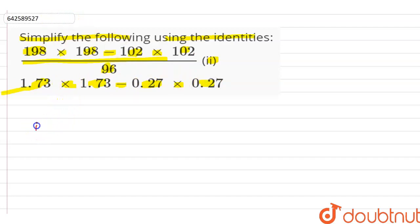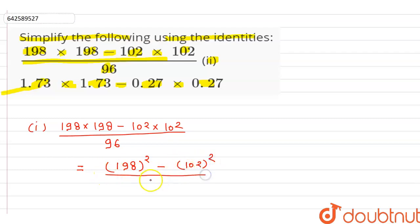So first of all we write down the first. That is 198 x 198 - 102 x 102 and whole divided by 96. We can also write it as 198 whole square minus 102 whole square upon 96.